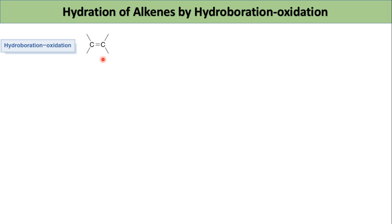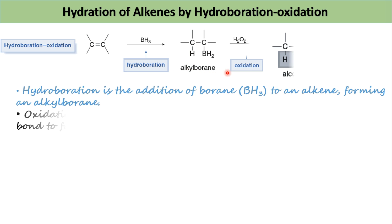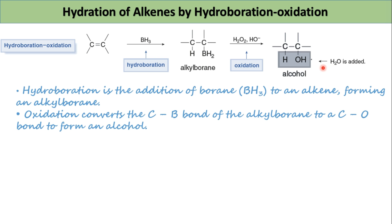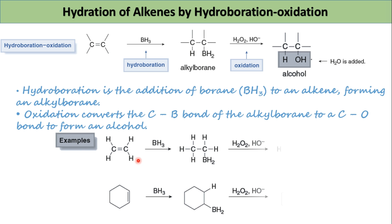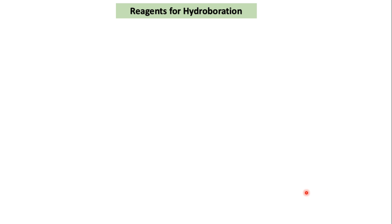Hydroboration is the addition of borane, BH₃, to an alkene, forming an alkylborane. Oxidation converts the C-B bond of the alkylborane to a C-O bond to form an alcohol. Whether the alkene is acyclic or cyclic, hydroboration followed by oxidation can be used to achieve hydration across the carbon-carbon double bond.